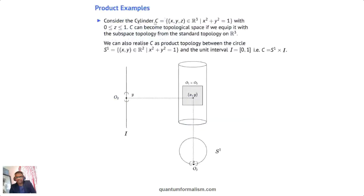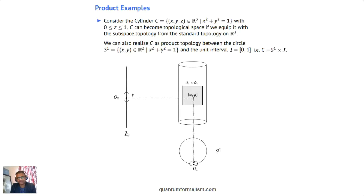Here's an example. A cylinder can be viewed as a product space of the circle S1 and the unit interval I. I made a picture here to help you visualize: on one axis you have the unit interval, and on the other you have the circle. I encourage you to draw pictures, especially with other spaces. The claim is that the cylinder can be represented as the product S1 × I.